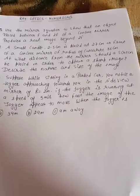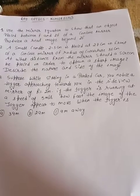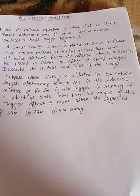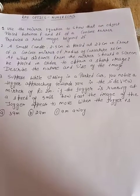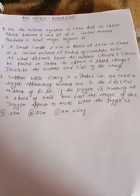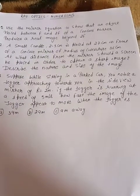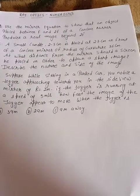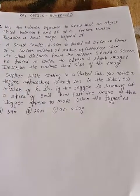How fast does the image of the jogger appear to move when the jogger is 39 meters, 29 meters, and 9 meters away? You have to find this out separately for parts a, b, and c.